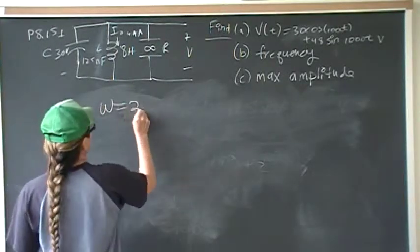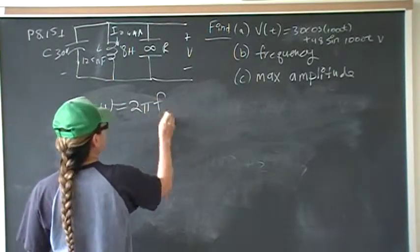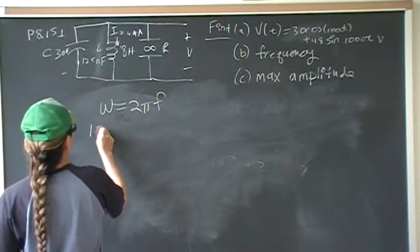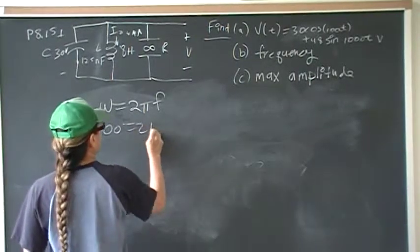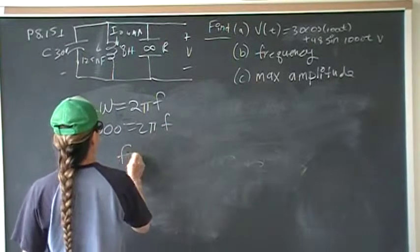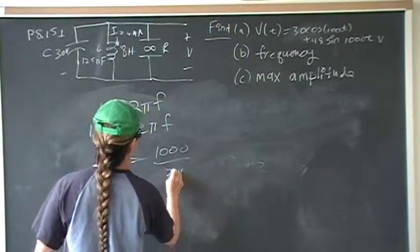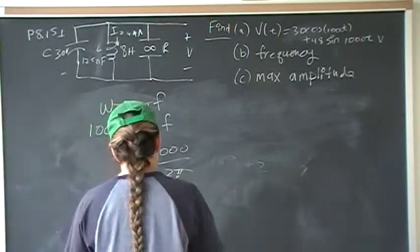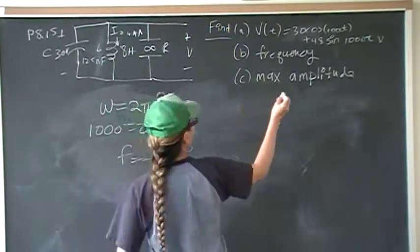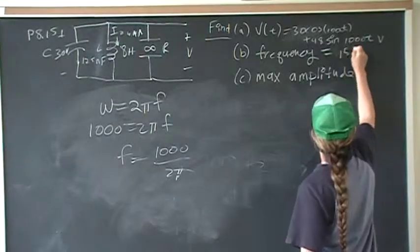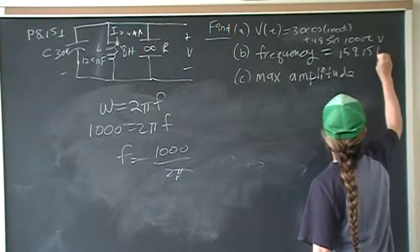But omega is equal to 2 pi frequency. And we already solved for omega. So the frequency is 1000 divided by 2 pi, and that is going to be 159.15 hertz.